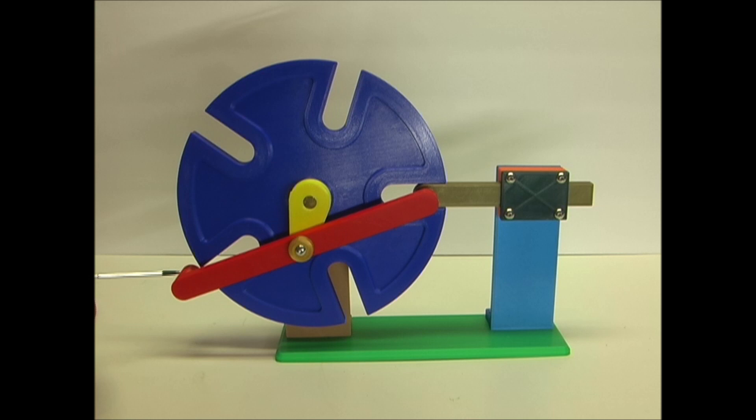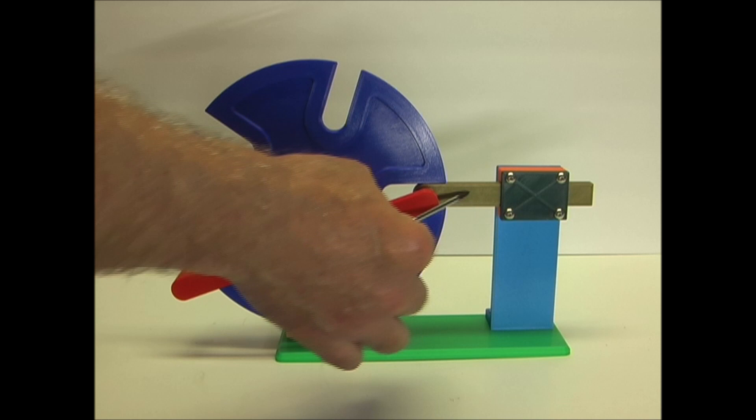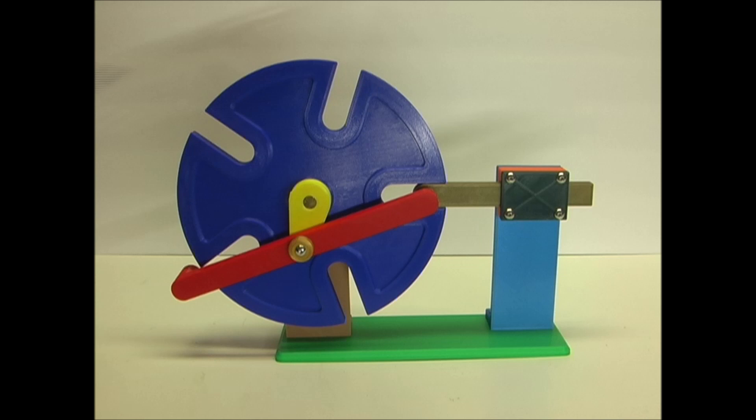This one uses a linkage arm and a pin to advance the indexing wheel. In between rotations, a slide is engaged in the slot to prevent rotation of the wheel.